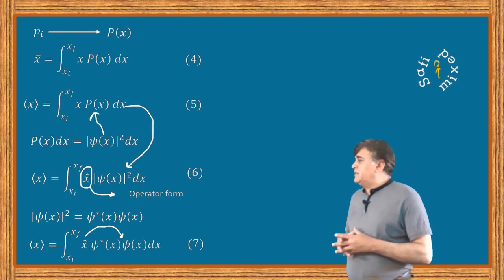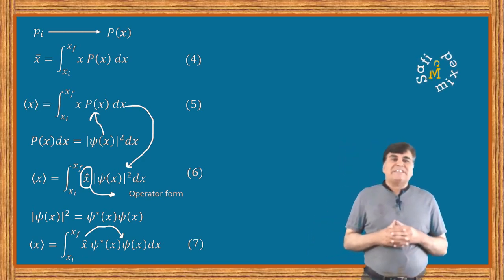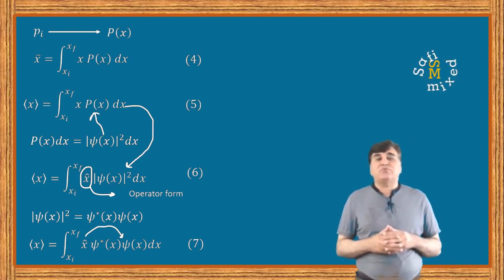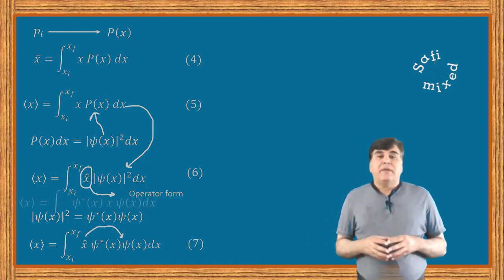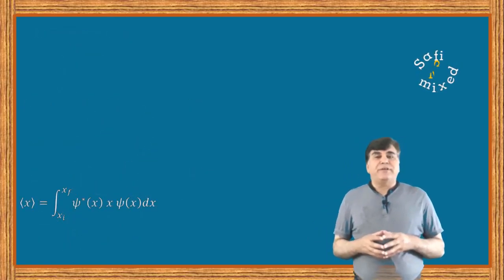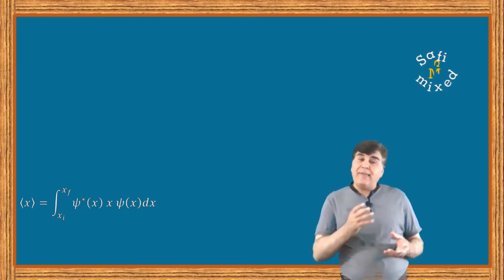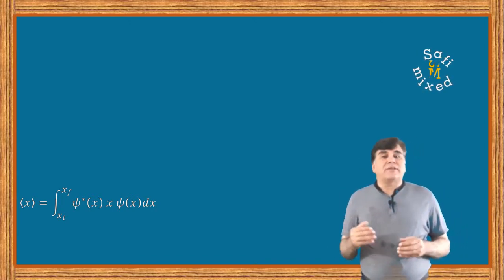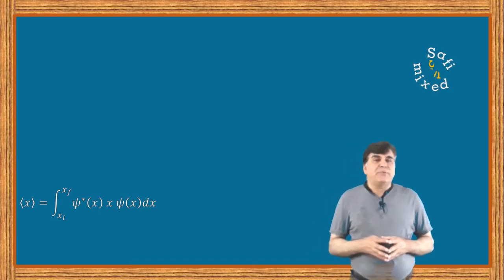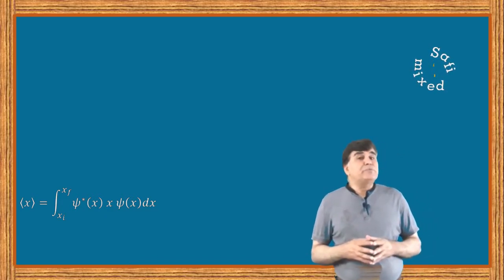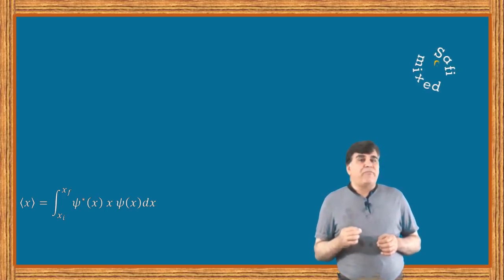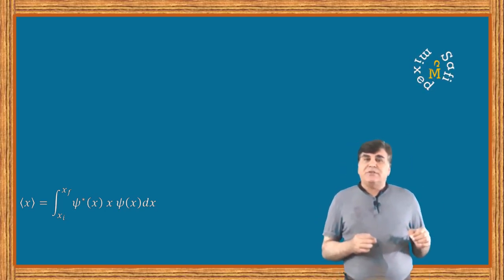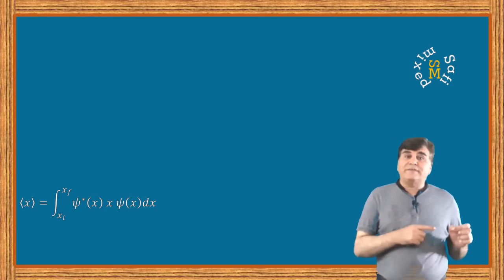We see from equation 6 that the expectation value is the expected average value of position predicted by quantum theory through the wave function. Note that we have placed the position operator in between the conjugate of the wave function and the wave function. In general this is not an allowed operation for other quantum mechanical operators, such as the momentum operator which depends on the derivative of position. Nevertheless, this is a standard way of writing the expectation value in quantum mechanics, where the operator acts on the wave function to its right side.